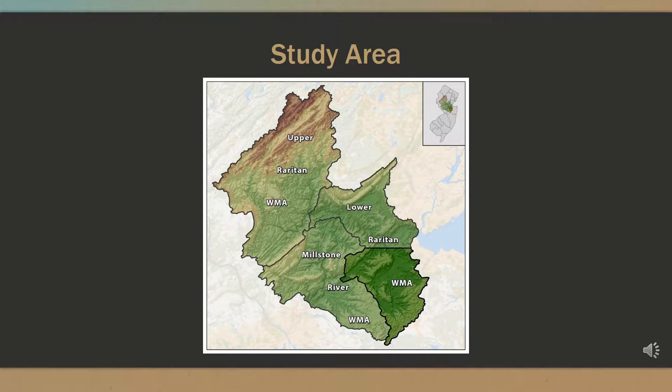The study area includes the southern half of the Lower Raritan River watershed management area, as highlighted on this map. This area is 1,774 square miles with a population of 301,892 recorded in 2010. The population density is approximately 1,756 people per square mile.